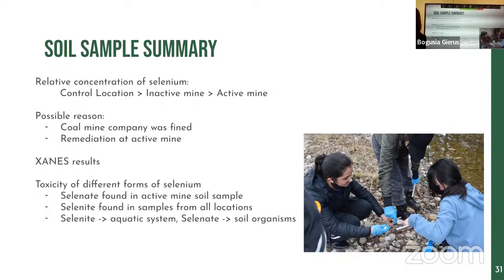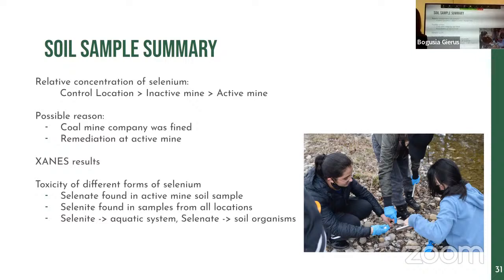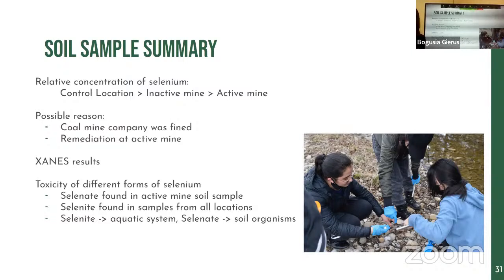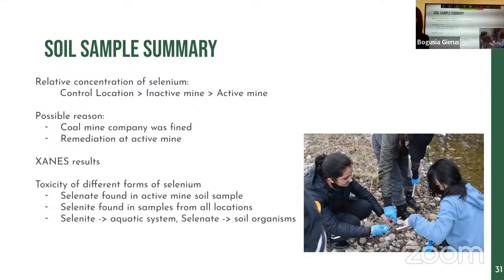We assumed the relative selenium concentration at the control location represents background levels. Compared to the control, the active mine site has lower relative selenium concentration despite being downstream of an active coal mine. Our explanation is that the water may have been remediated by the mining company, as that company was fined years ago for pollution. From our XANES graph, soil samples from the active mine site contain selenate — a possible pollutant from the coal mine. All three locations contain selenite, which is generally more toxic in aquatic systems, while selenate is more toxic to soil organisms.